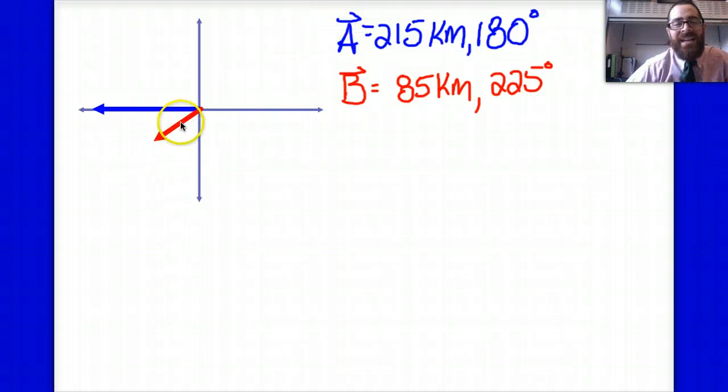Now if I take vector B, the red vector here, and I move it head to tail, a little bit out of the frame here but that's pretty close, I should recognize that adding those two vectors head to tail produces my resultant vector, which is really what I'm looking for. How far am I from where I started from?